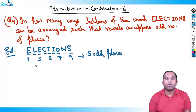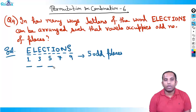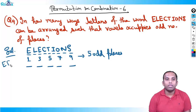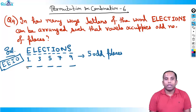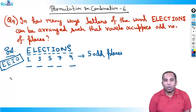The vowels can be occupied only at odd places. There are five odd places: 1, 3, 5, 7, 9. In the word 'elections', there are four vowels — double E, I, and O. These four vowels can be placed in the five odd places in 5C4 ways.